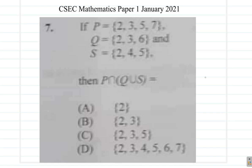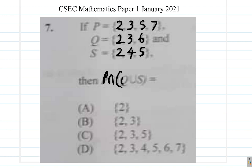If P equals {2, 3, 5, 7}, Q equals {2, 3, 6}, and S is {2, 4, 5}, then what is P intersect Q union S?